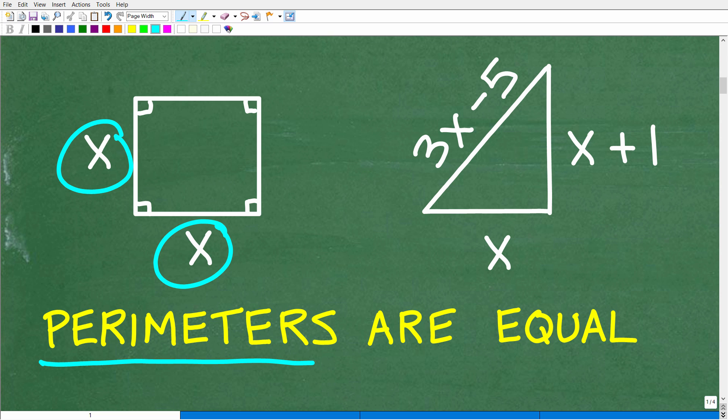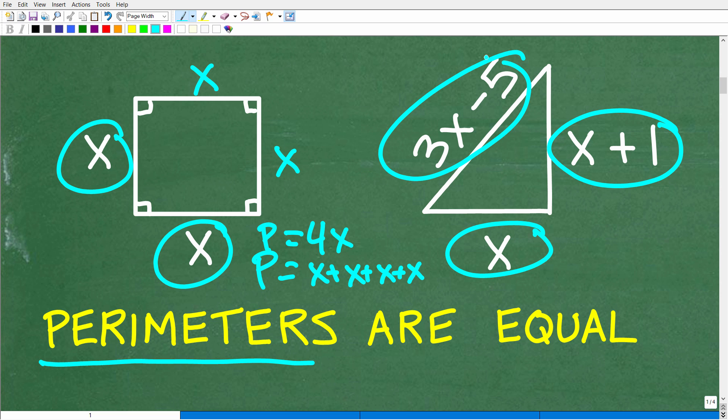So what would be the perimeter of the square? Well, it would be x plus x. This over here is another x, and this is x because a square, all sides are equal. So the perimeter of the square is going to be x plus x plus x plus x. Now, that's a lot of x's to write, so we could just say it's 4 times x because we have 4 x's. That would be a better way to express the perimeter. Now, the triangle, the perimeter of the triangle is going to be x plus x plus 1 plus 3x minus 5. So if the perimeter of the square is equal to the perimeter of the triangle, we can build ourselves a lovely equation because when you have a variable, you can't solve for that variable unless you have an equation.